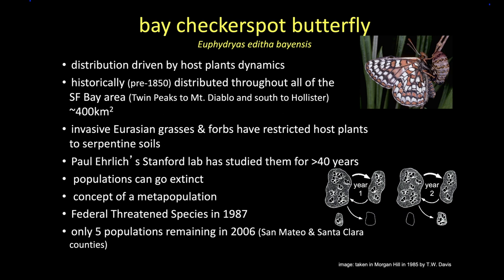Historically, before the gold rush, these butterflies were throughout the San Francisco Bay Area — East Bay, North Bay, South Bay, peninsula everywhere — ubiquitous over about 400 square kilometers. Then we started fragmenting the habitat, and importantly introduced many invasive species. All those non-native grasses and forbs came in and out-competed the plants the butterfly needs to complete its life cycle. The butterfly started winking off and disappearing across large sections.